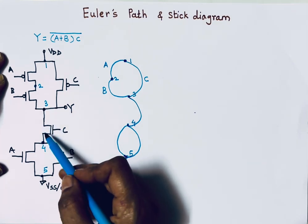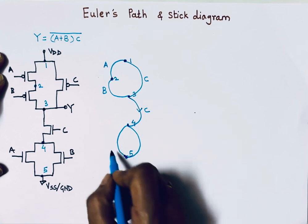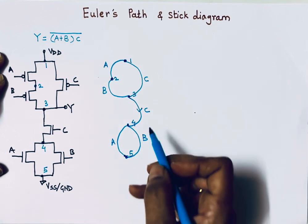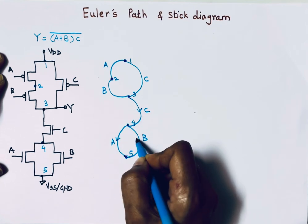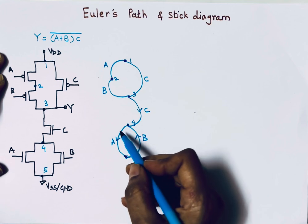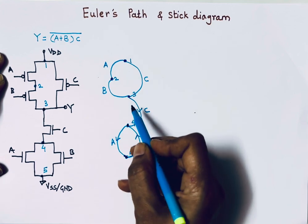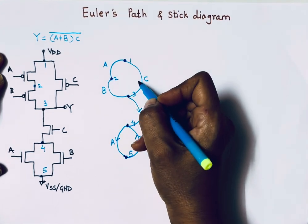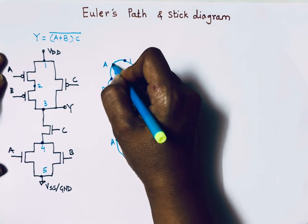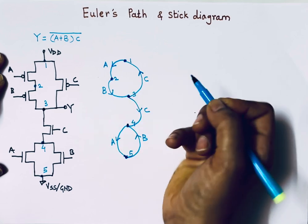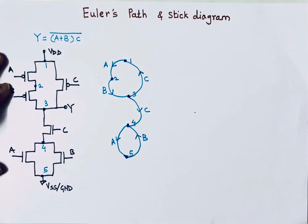The path can go: C, then A, then B — traversing each edge only once, though vertices can be revisited. The same path order — C, A, B — should be followed in the pull-up network as well. In this way we can draw Euler's path.